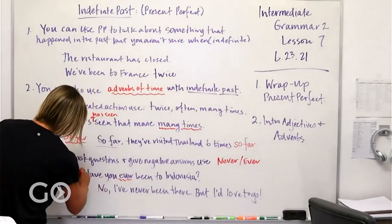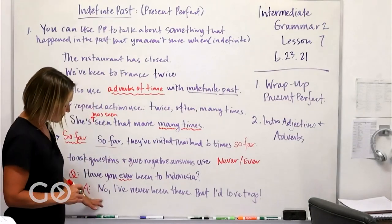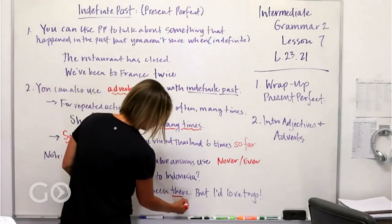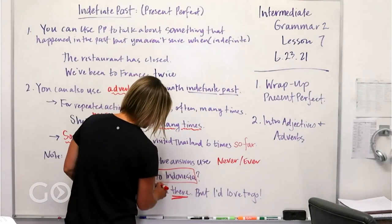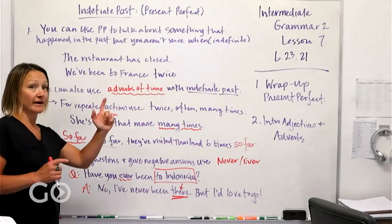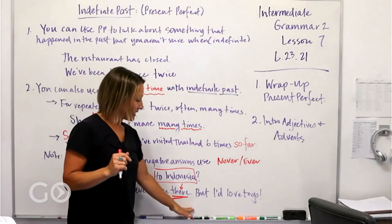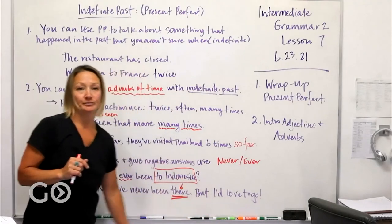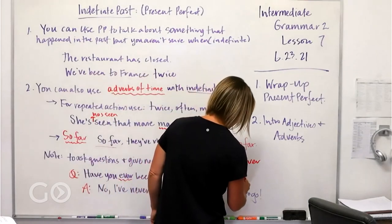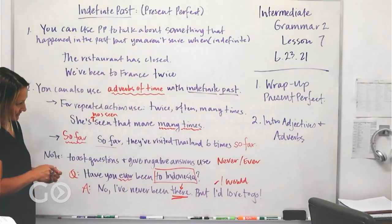For the answer: 'No, I've never been there' — 'there' is used as a pronoun referring back to Indonesia. 'Have you been there?' — there meaning Indonesia. 'I've never been there, but I'd love to go.' 'I'd love to go' uses the conditional — 'I would love to go.'